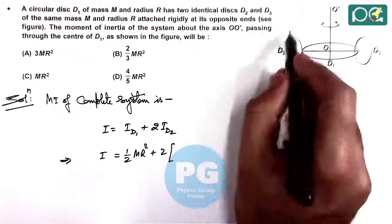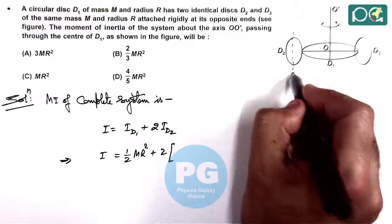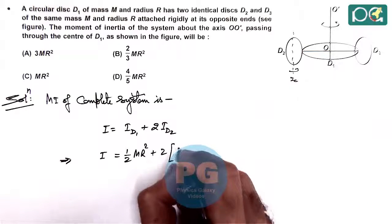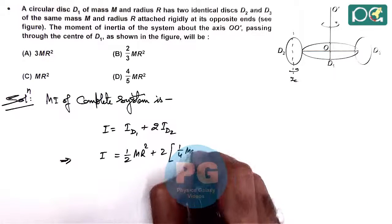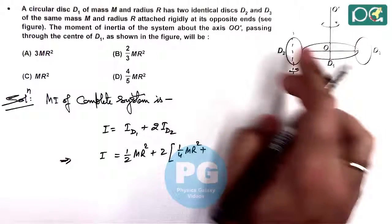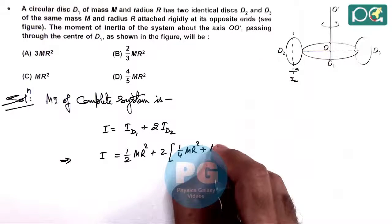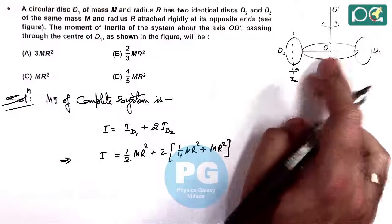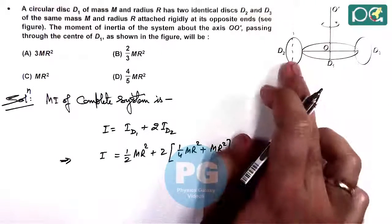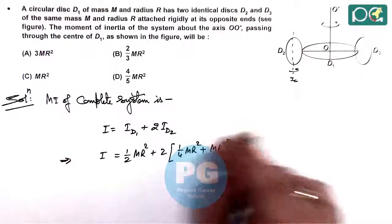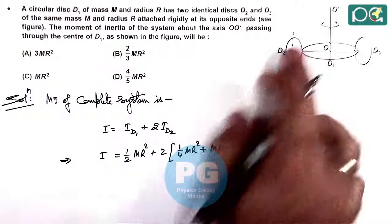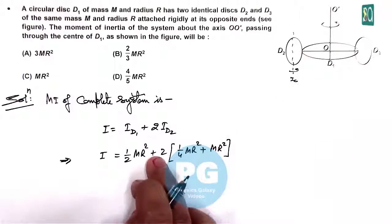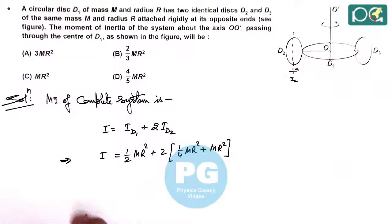So, disk about the diametrical central axis, moment of inertia we know is Ic which is given as 1/4 MR², and using parallel axis theorem we can write this plus MR² about the central axis OO'. Using parallel axis theorem we have calculated the moment of inertia of disk D2 about the given axis, it is Ic plus MR², and twice is for the two disks D2 and D3.